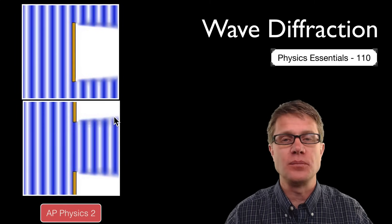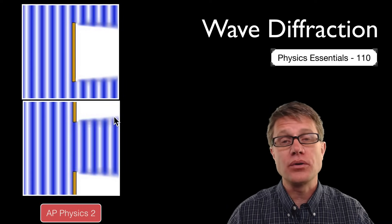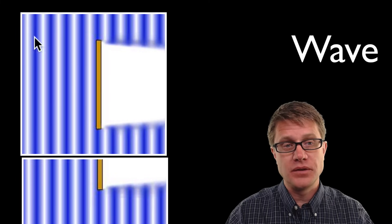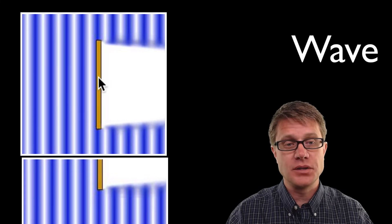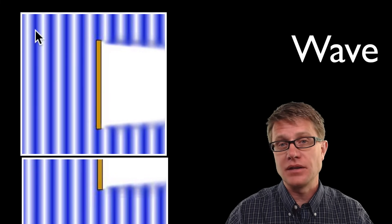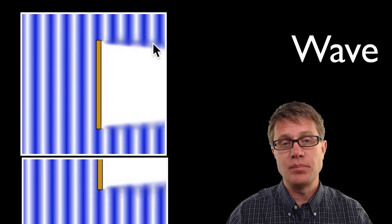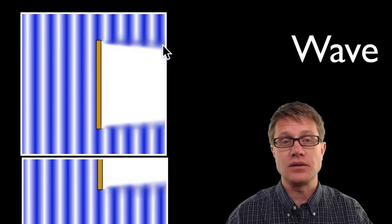Which is the bending of waves as they move around an obstacle or through an opening. You can imagine these are water waves here moving from left to right, and this is an obstacle put in their path. As these ones on the top just keep going, these ones right here are being diffracted. They are slightly bending around that obstacle.